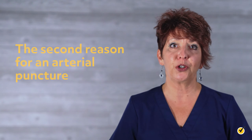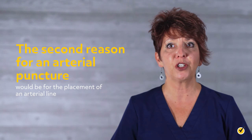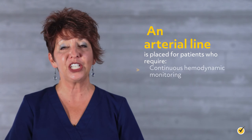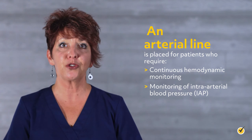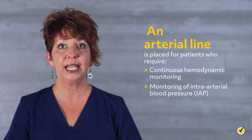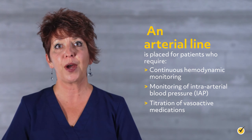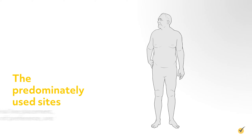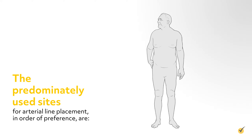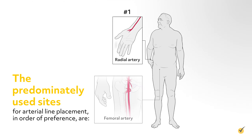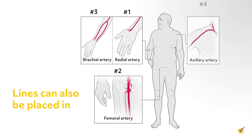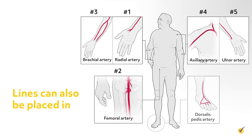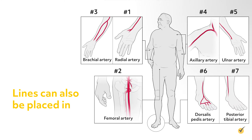The second reason for an arterial puncture would be for the placement of an arterial line. An arterial line is placed for patients who require continuous hemodynamic monitoring or monitoring of intra-arterial blood pressure (IAP), and titration of vasoactive medications. The predominantly used sites for arterial line placement in order of preference are the radial, femoral, and brachial arteries, though lines can also be placed in the axillary, ulnar, dorsalis pedis, and posterior tibial arteries.